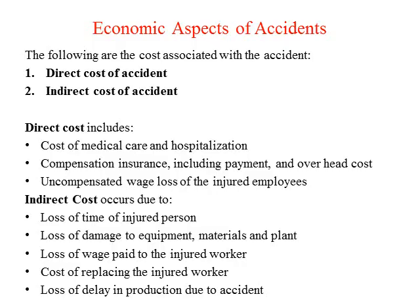While discussing industrial accidents, as an industrial engineer, our major concern is about cost parameters related to accidents. Generally two cost parameters are related to accidents. One is direct cost and the second is indirect cost. Direct cost is the cost directly associated with the person having an accident — the amount paid for hospital expenses, compensation, insurance, and the wage loss of the injured person. All such costs are directly associated with that accident.